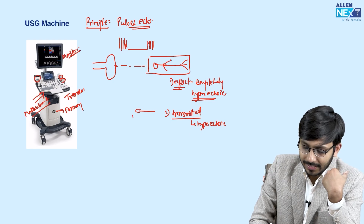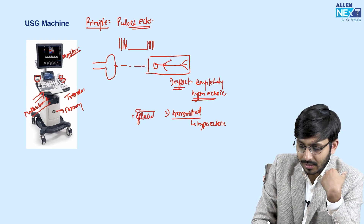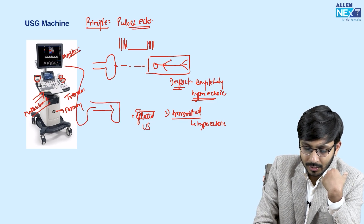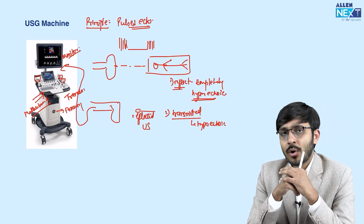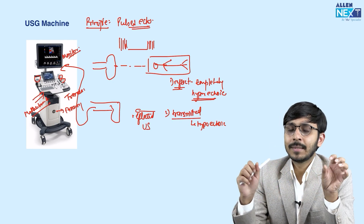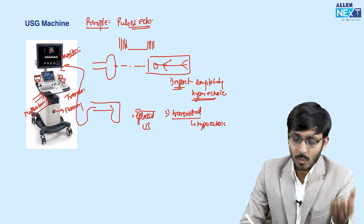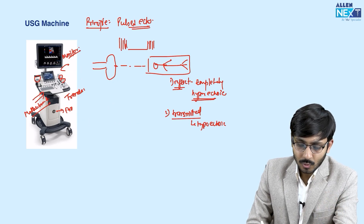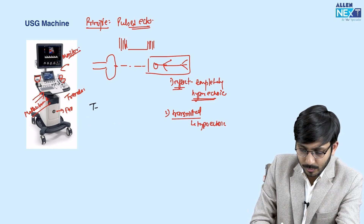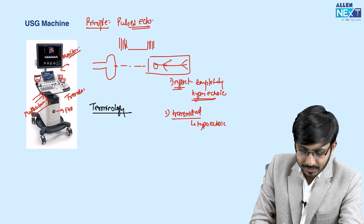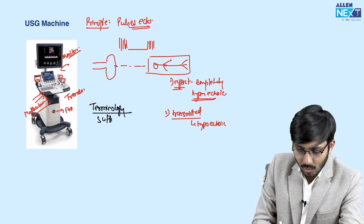These reflected ultrasound waves are again picked up by the same transducer and converted into the images that we see on the monitor. This is the basic principle of how the ultrasound machine works. The terminology we use in ultrasound uses the suffix 'echoic'.